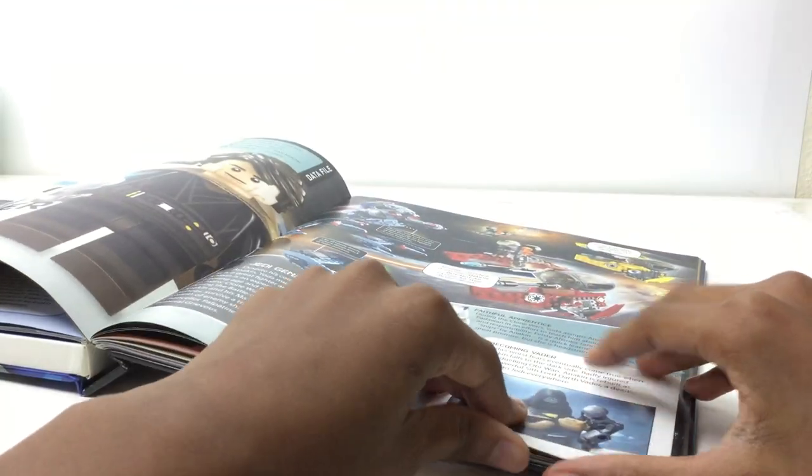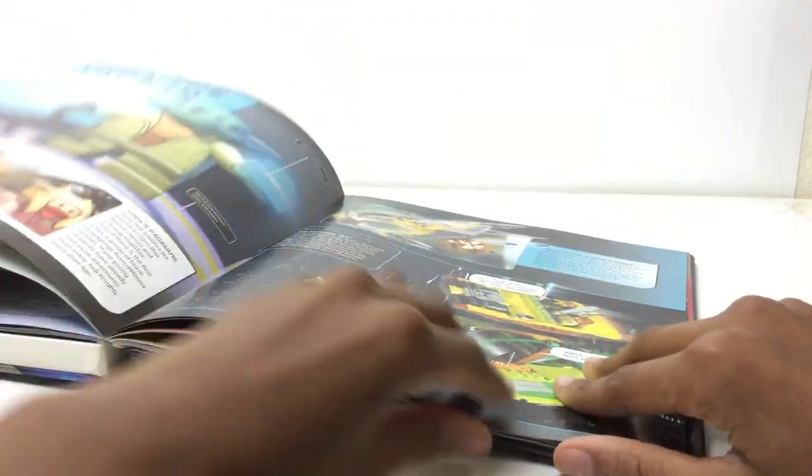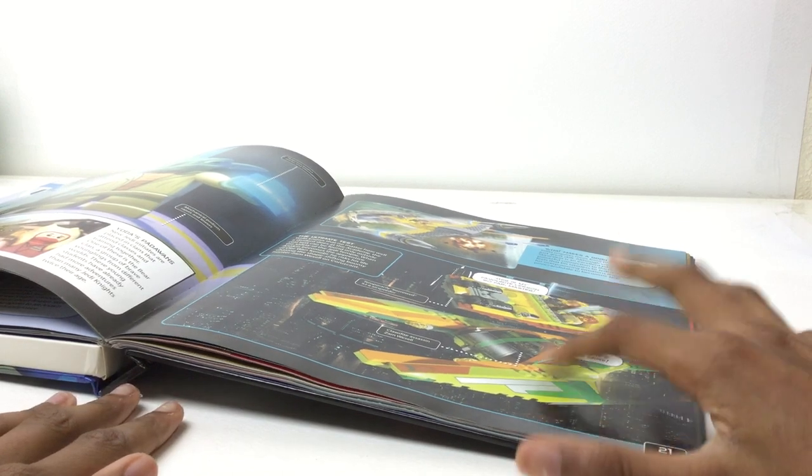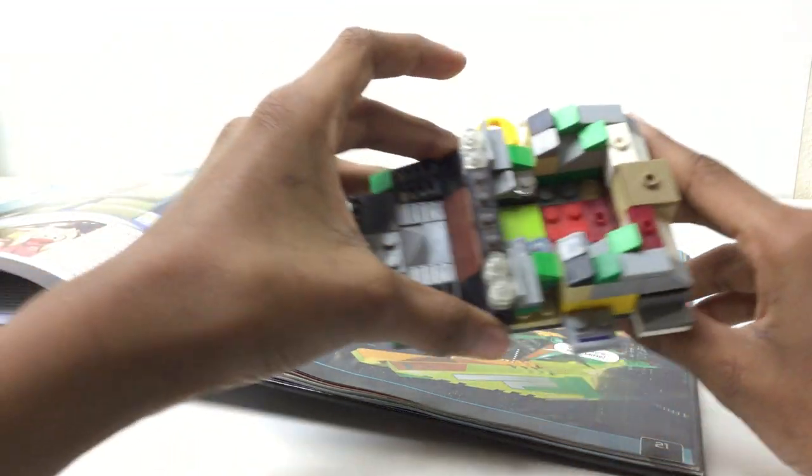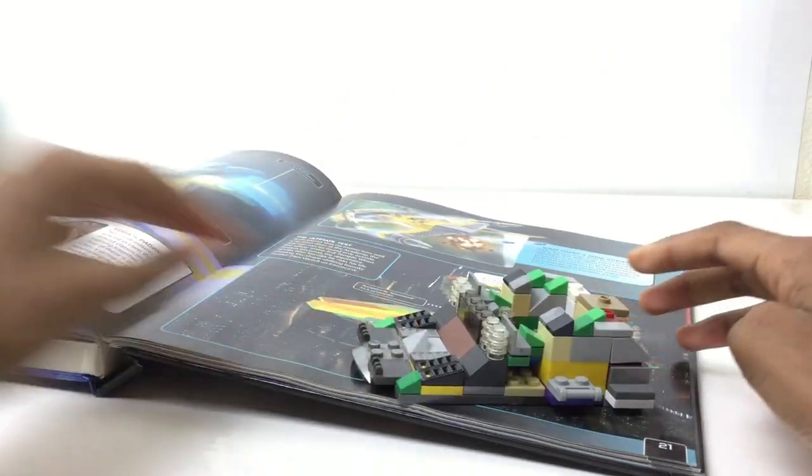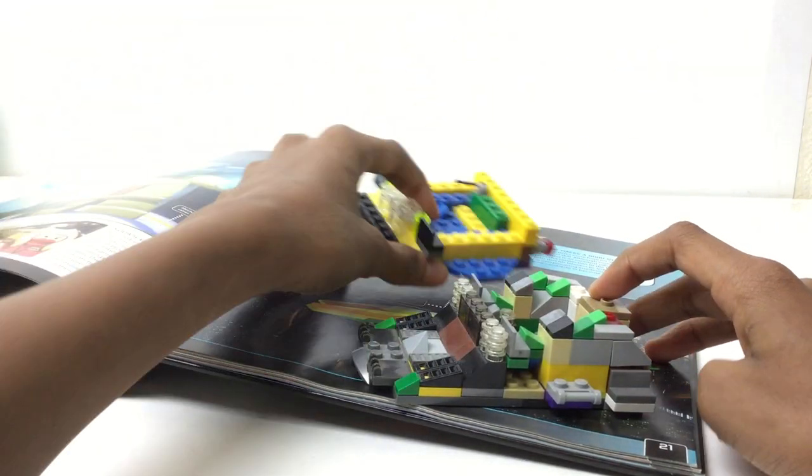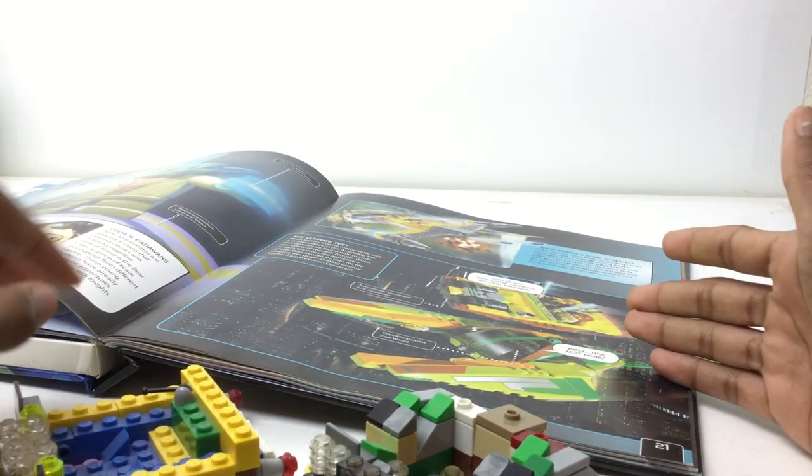And then, yeah, I took a lot of time with this book. Here, this right here. Zam Wessel's speeder, and Anakin and Obi-Wan's. I tried to recreate that. Yes, this, I thought, would be Zam Wessel's. And this would be Obi-Wan and Anakin's. So, yeah, there's the actual thing. Here's what I tried to build.